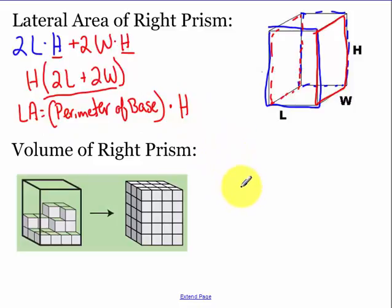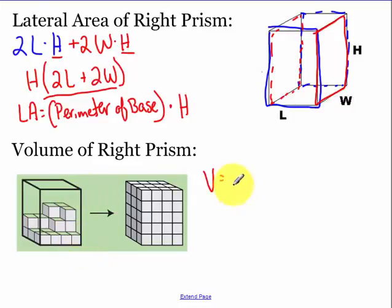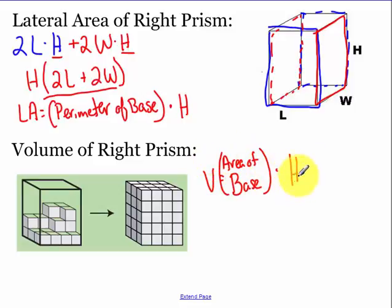Volume of a right prism. Volume is how many one-by-one unit cubes I can fit into our prism. Volume equals length times width times height, because length times width gives us how many we can fit on just one base, times the height. So volume equals the area of the base times the height.